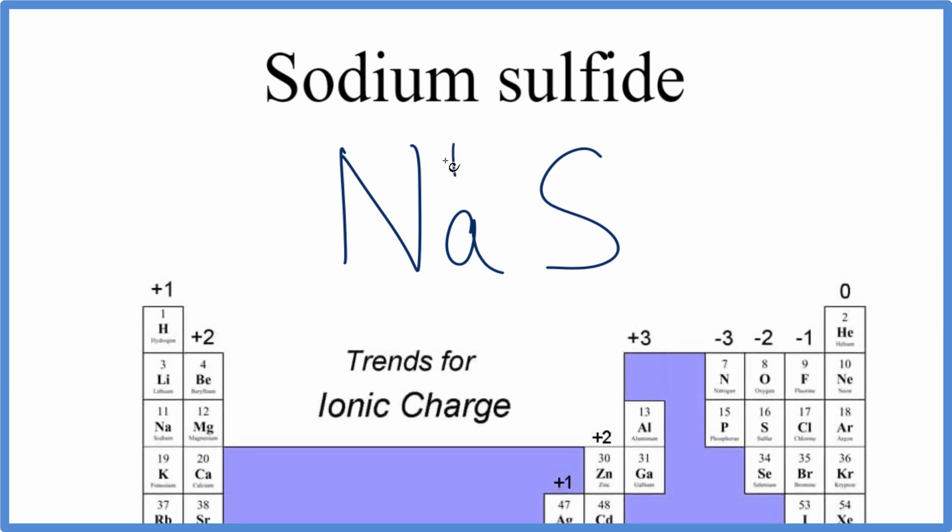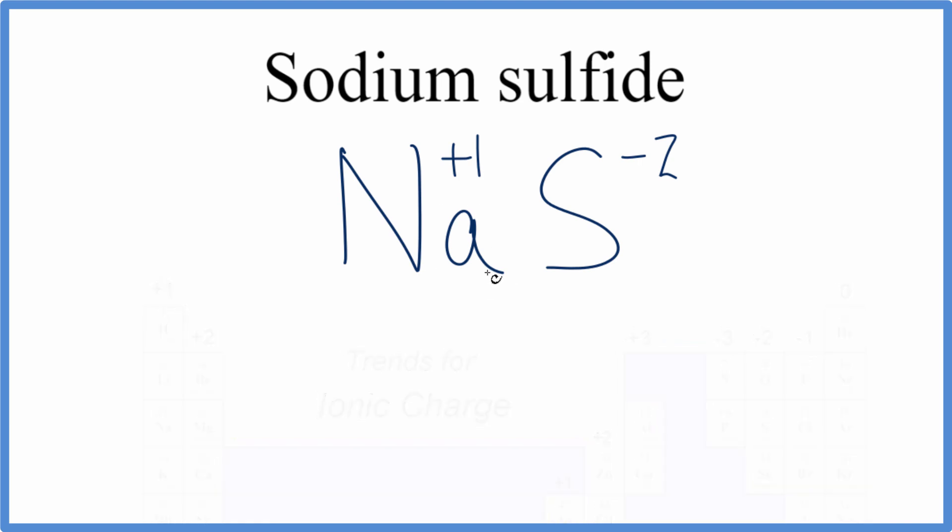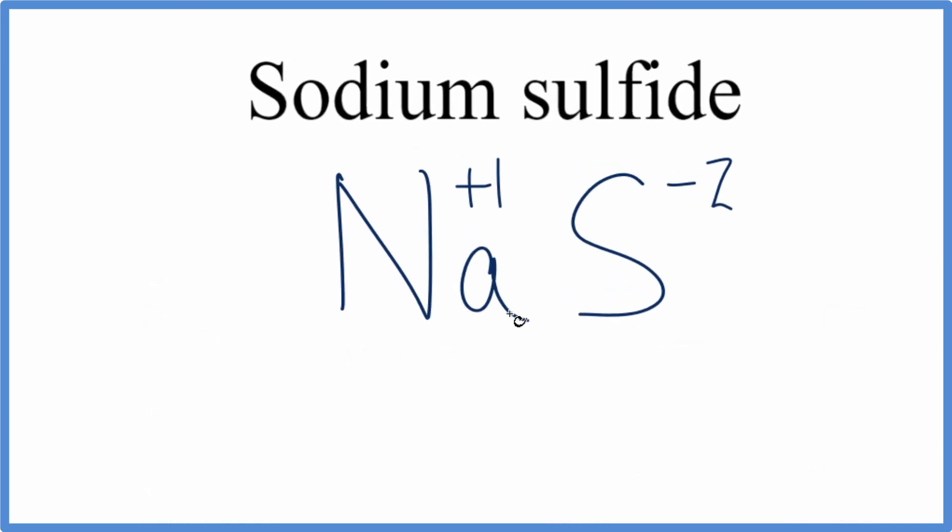Sodium has a charge of plus one. Sulfur has a charge of minus two. So these charges aren't balanced. We can change the coefficients here to try to get both sides to add up to zero, to have a net charge of zero.